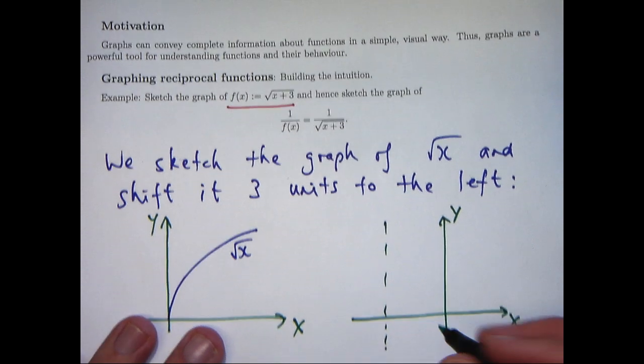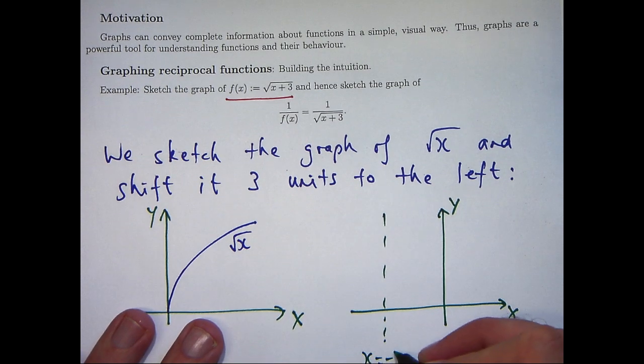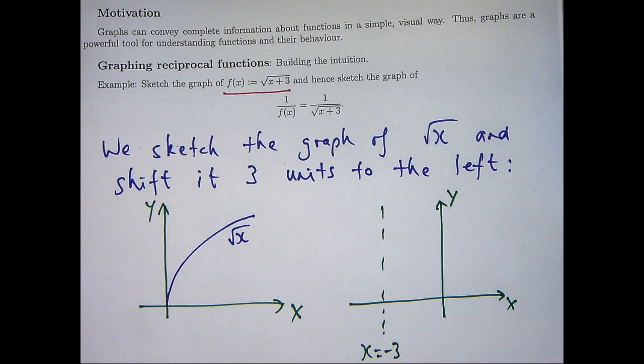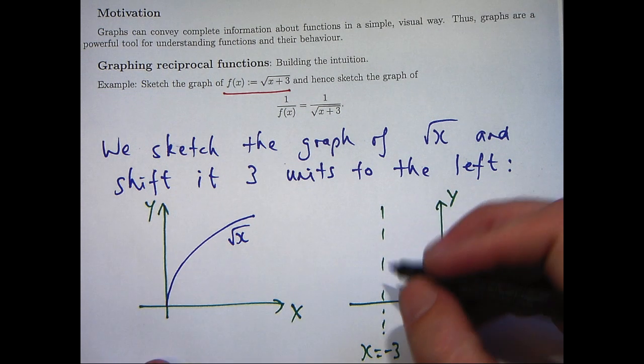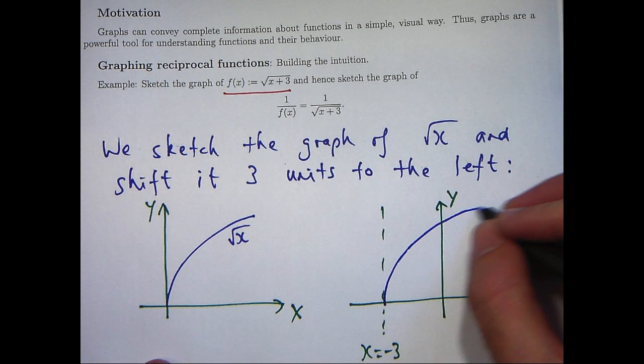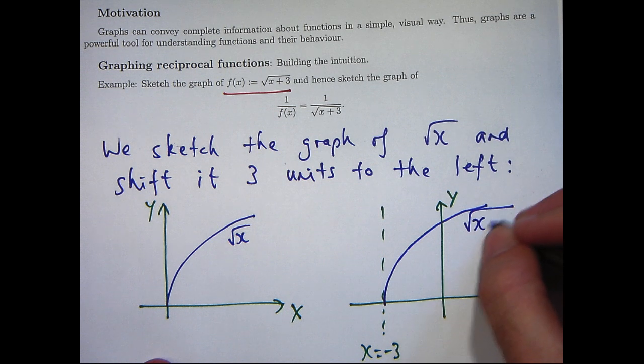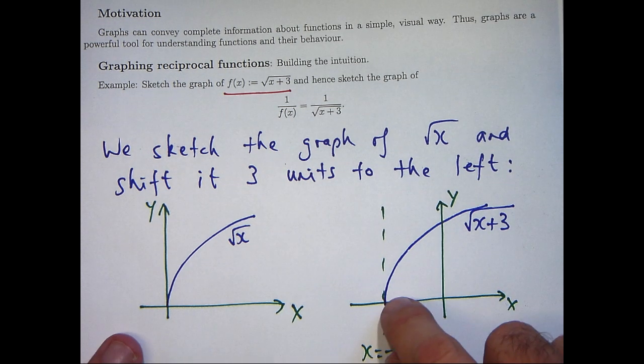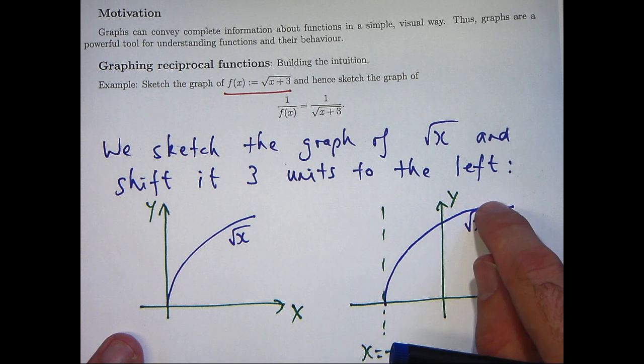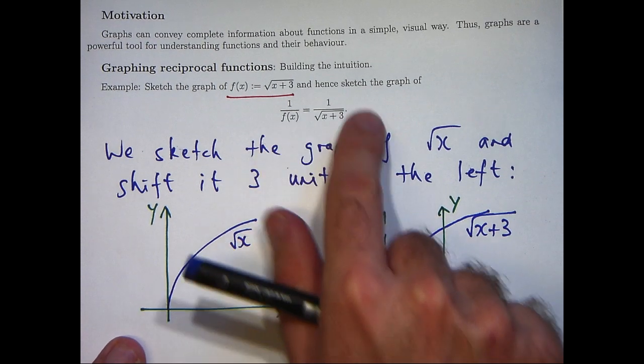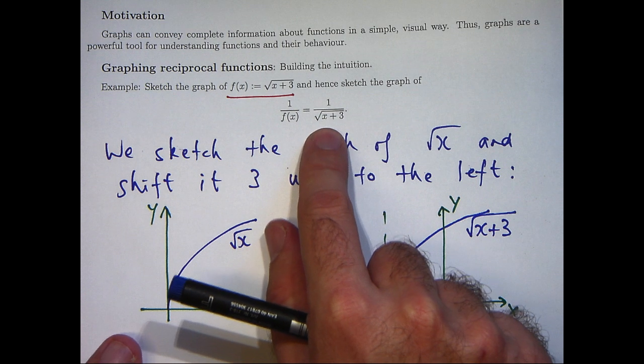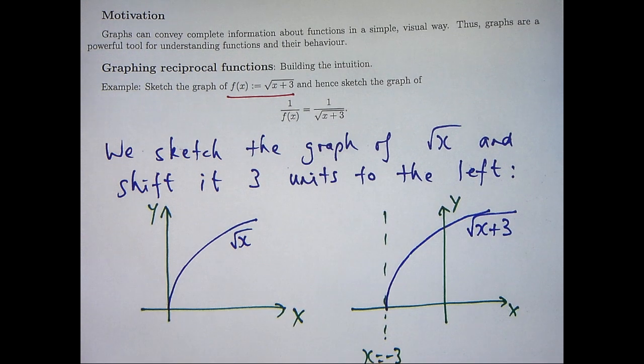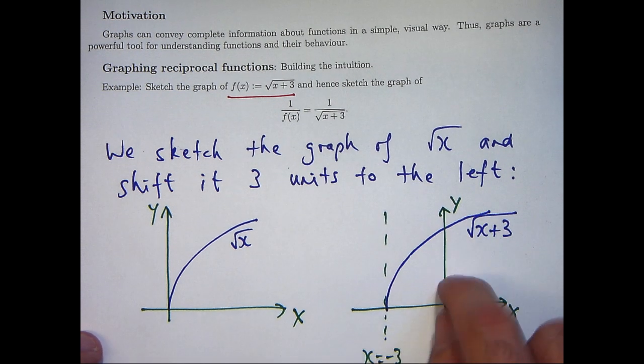So here's the line x equals minus 3. So just shifting that curve along should get something like this. Okay, so how can I use this graph to sketch the graph of this reciprocal function here? Well, let's make some observations about the characteristics of this graph.